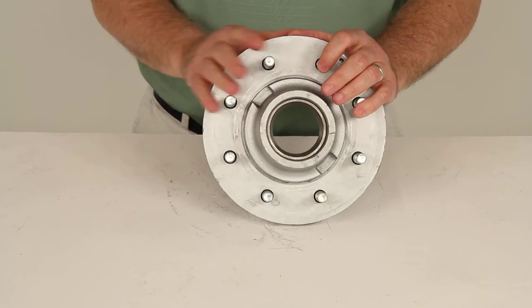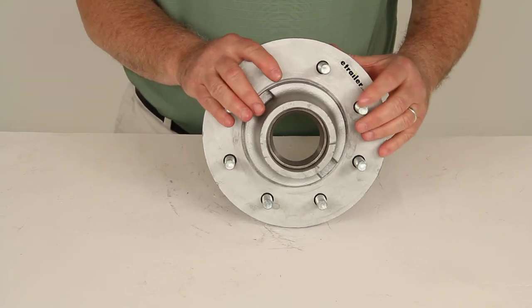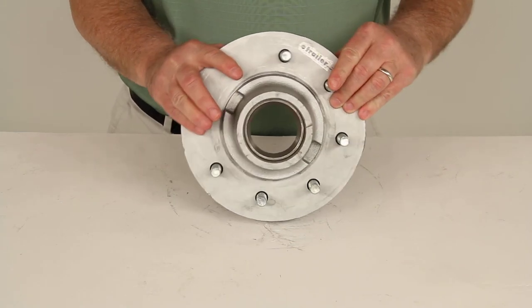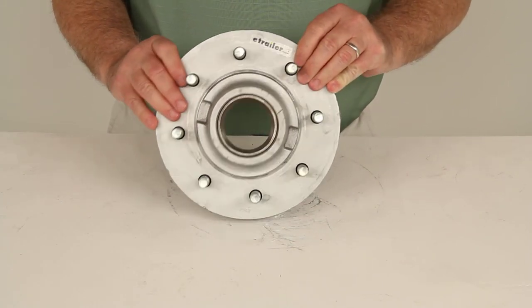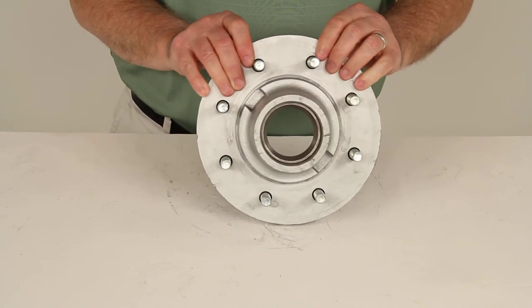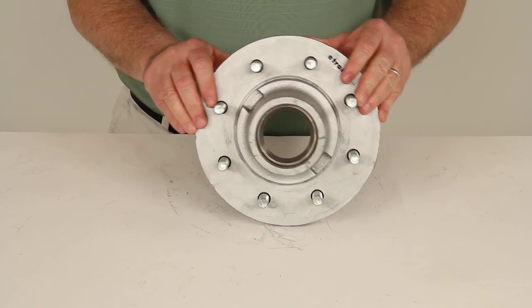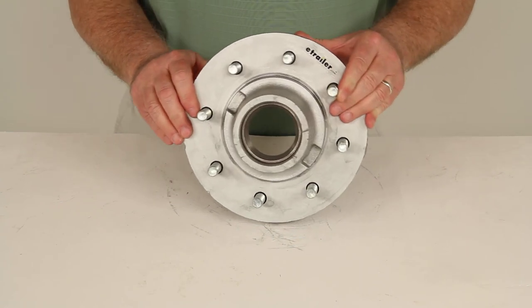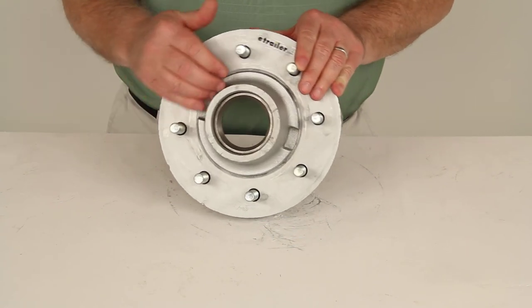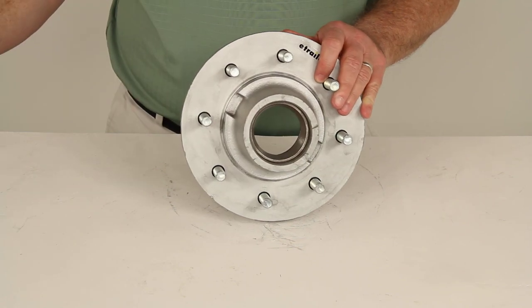And again, the bearings, the grease seal, the grease cap, and the lug nuts are all sold separately. That should do it for the review on part number 8-231-50, the Dexter trailer hub for 5,200-pound to 7,000-pound axles with the 8 on 6 1/2 inch bolt pattern.